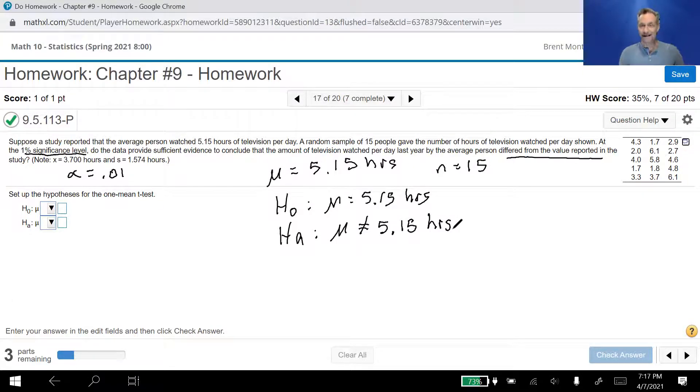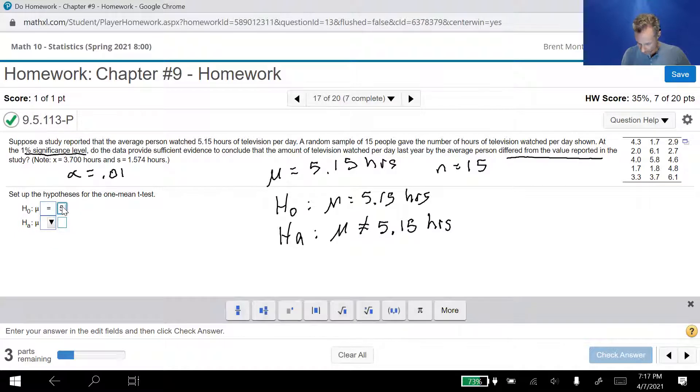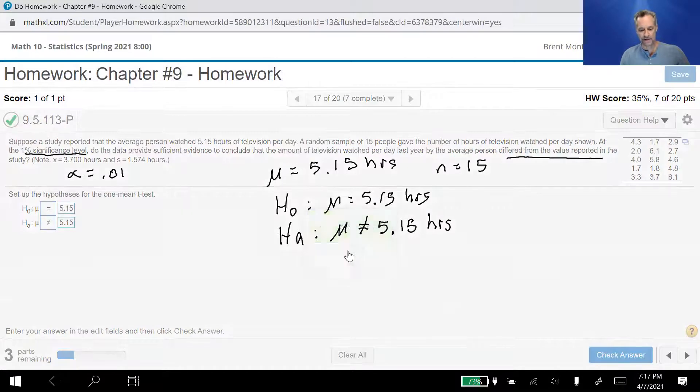Let's go ahead and enter those in to make sure that we have the right answers. So we have mu equals 5.15. Now bear in mind, the null hypothesis always has an equal sign. We will get to things later where it's not going to have an equal sign because it's not a numeric value that we're talking about. But the null hypothesis is always what they call the status quo or assuming things haven't changed. Let's go ahead and check that. We see that we have the right answers.